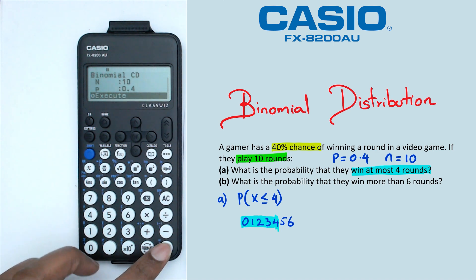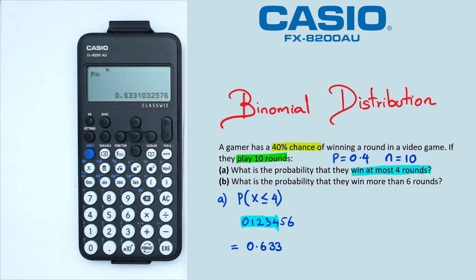So when we click execute, we're going to get a probability. And the probability of x less than or equal to 4 is going to be 0.6331.